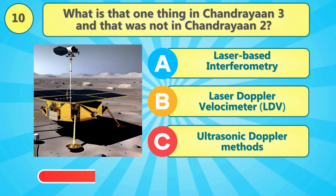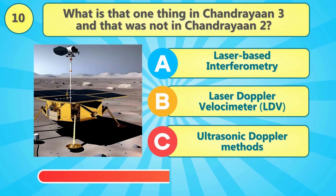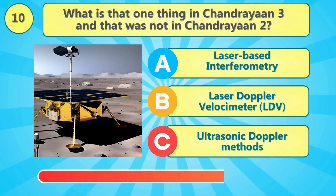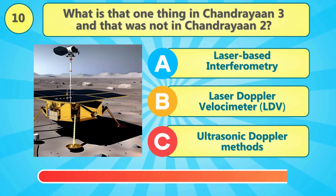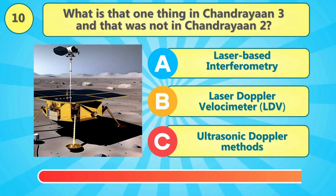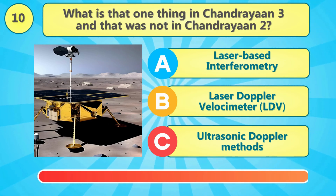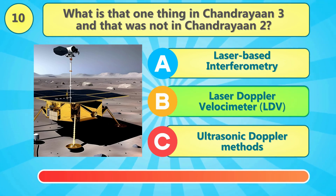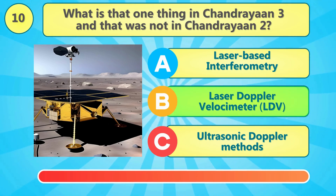What is one thing in Chandrayaan 3 that was not in Chandrayaan 2? The answer is option B.